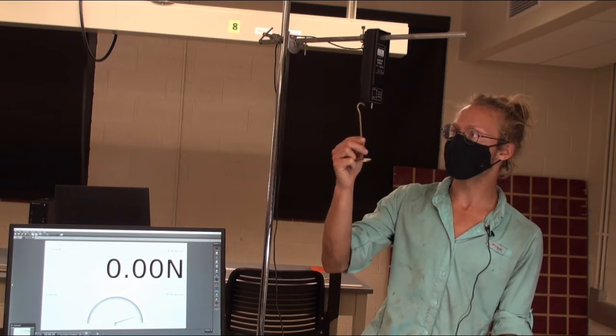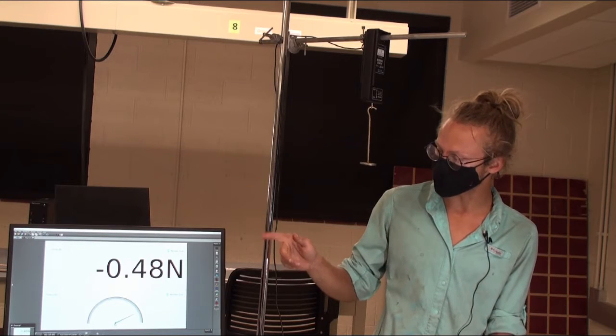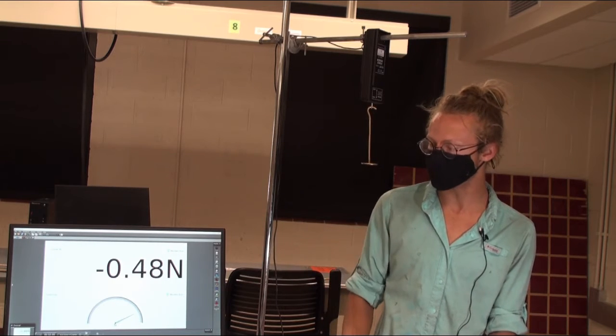So if we throw on our 50 gram mass hanger, take a look, we're getting up to round about a half of a newton.